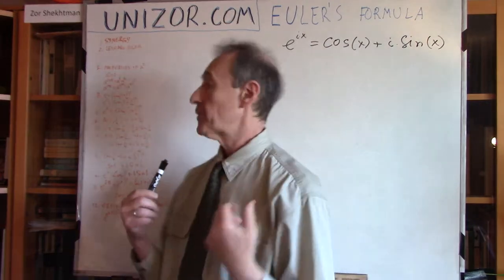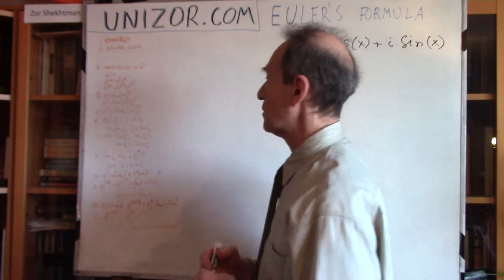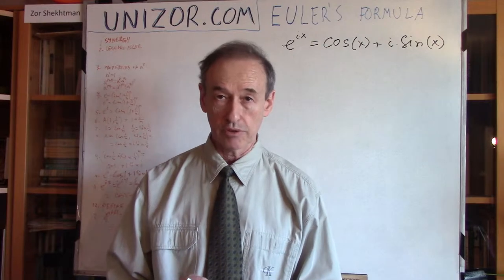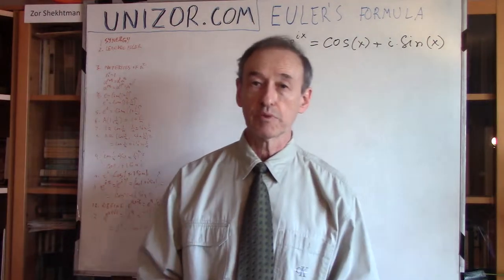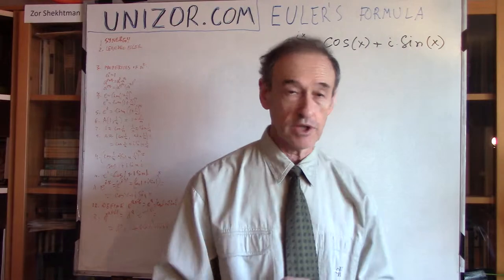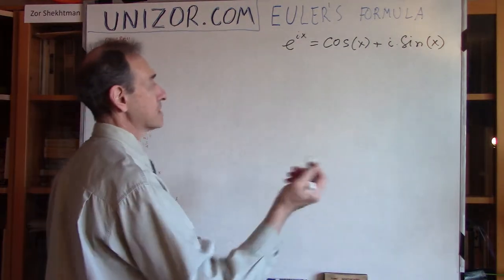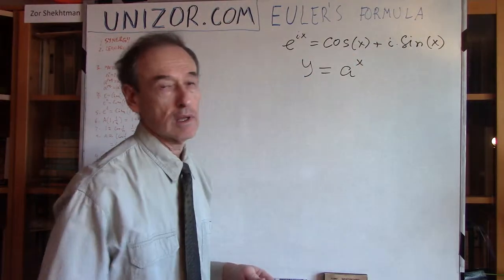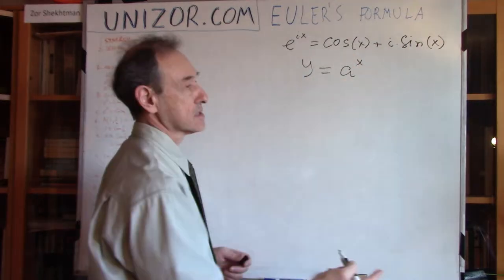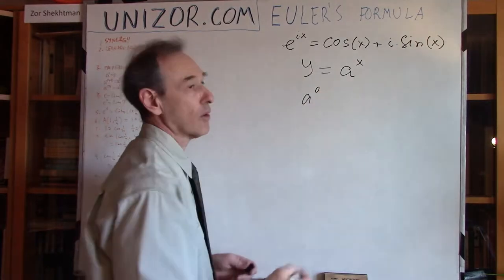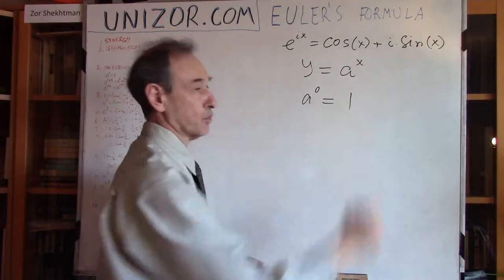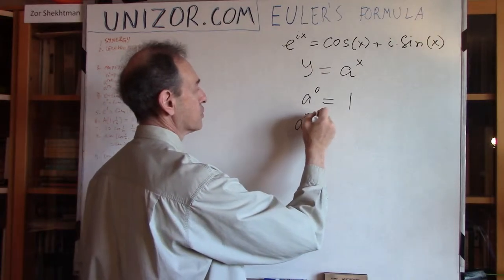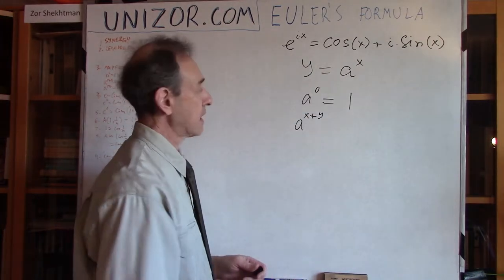To define it properly, we have to define it in a way so this definition actually complies with all the properties which we already know about exponential functions. Let me start with something which is basically the properties of the exponential function — these are properties which we would like to preserve in our new definition. What are the basic properties of exponential function? If you have a to the power of x, where a is the base and x is the exponent.